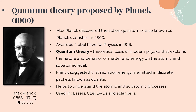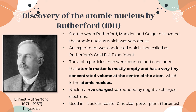The next scientific discovery is by Ernest Rutherford, who discovered the atomic nucleus. Rutherford was also a physicist and known as the greatest experimentalist since Michael Faraday. It started in 1911 when Rutherford, Marsden, and Geiger discovered the atomic nucleus, which was very dense. This observation led to an experiment called Rutherford's Gold Foil Experiment, where a thin gold sheet was emitted with alpha particles by a radioactive source. These alpha particles were then counted and concluded that atomic matter is mostly empty and has a very tiny concentrated volume at the center of the atom, called the atomic nucleus.